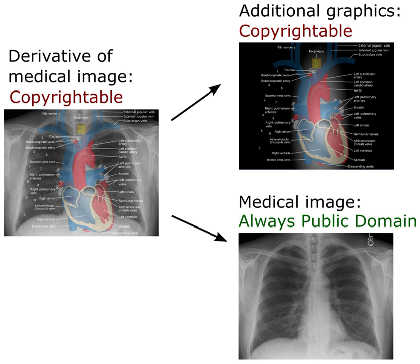A Creative Commons license is one of several public copyright licenses that enable the free distribution of an otherwise copyrighted work. A CC license is used when an author wants to give other people the right to share, use, and build upon a work that he or she has created.